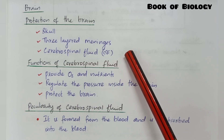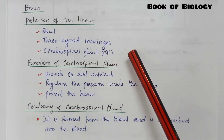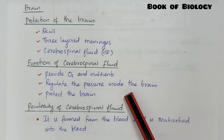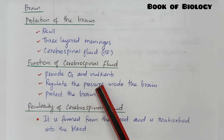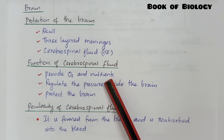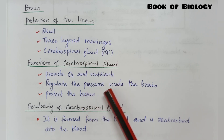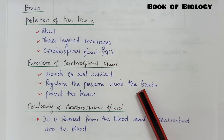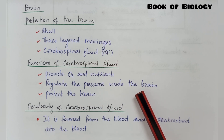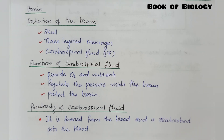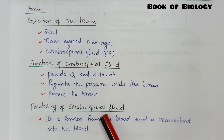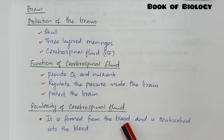The functions of cerebrospinal fluid include: providing oxygen and nutrients, regulating the pressure inside the brain, and protecting the brain. A peculiarity of cerebrospinal fluid is that it is formed from the blood and is reabsorbed back into the blood.